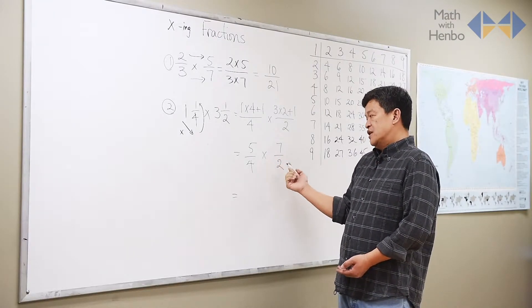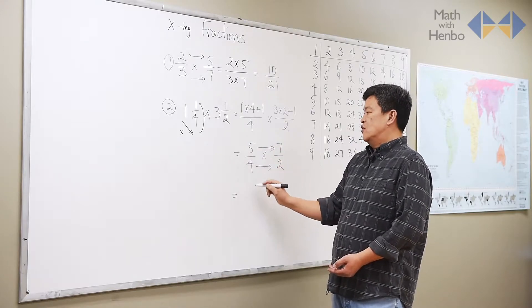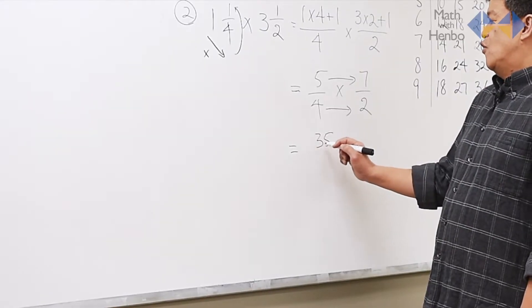Final answer, essentially, that we should get is following the same rule, 35 over 8.